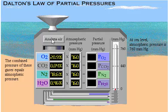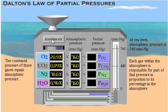The combined pressure of these gases equals atmospheric pressure. At sea level, atmospheric pressure is 760 millimeters of mercury, which means that the atmosphere pushes a column of mercury to a height of 760 millimeters. Each gas within the atmosphere is responsible for part of that pressure in proportion to its percentage in the atmosphere.